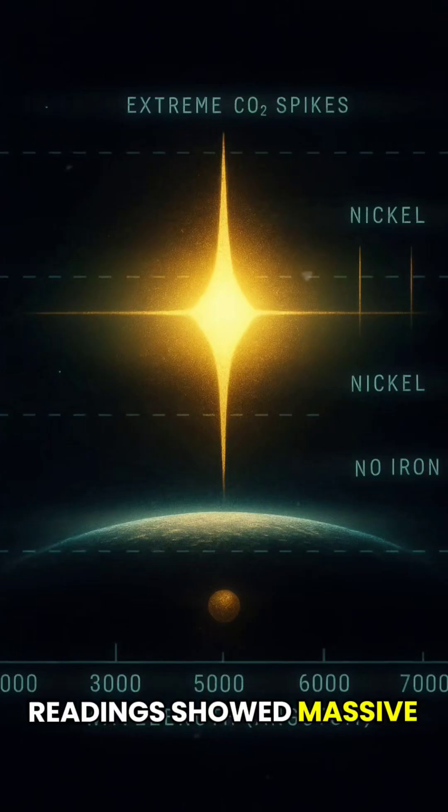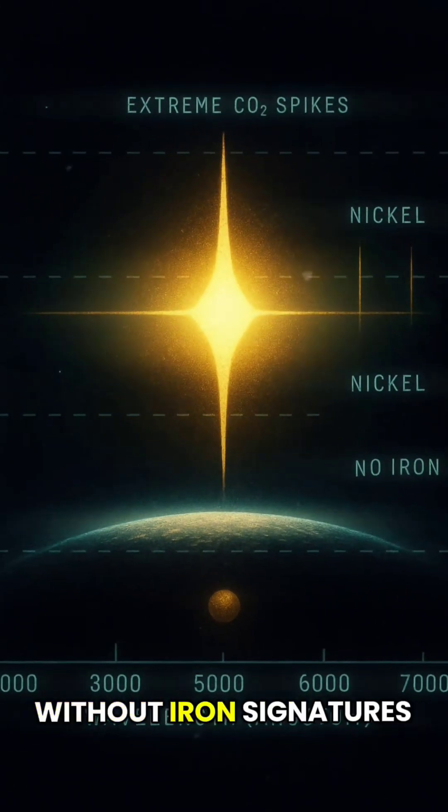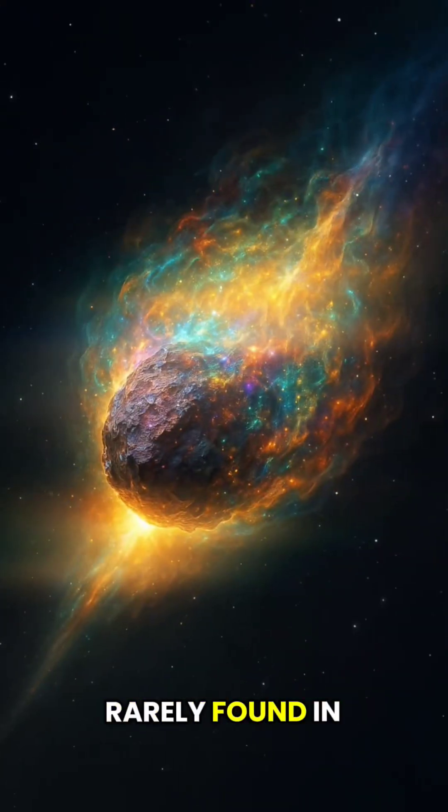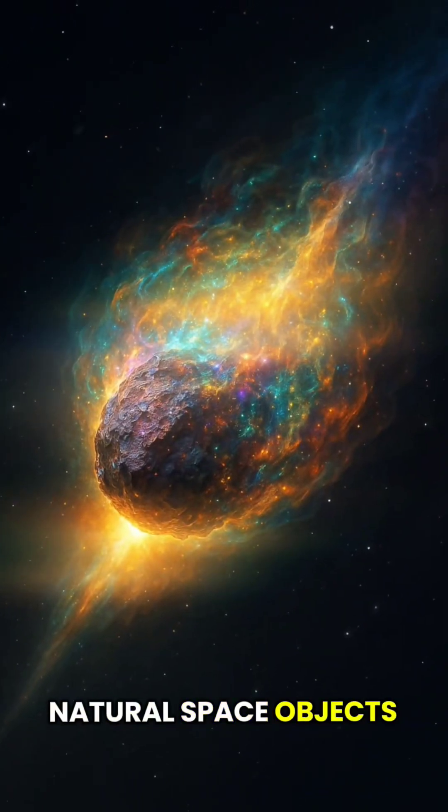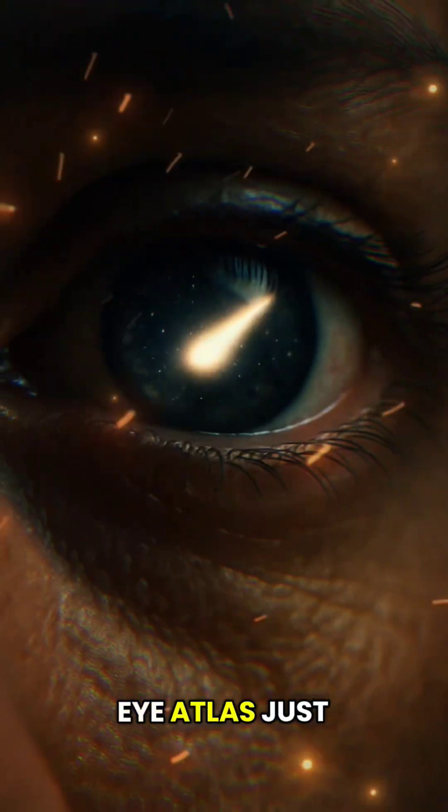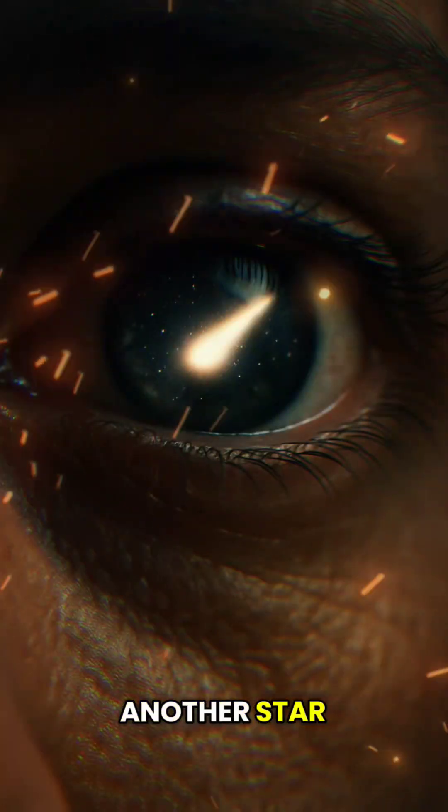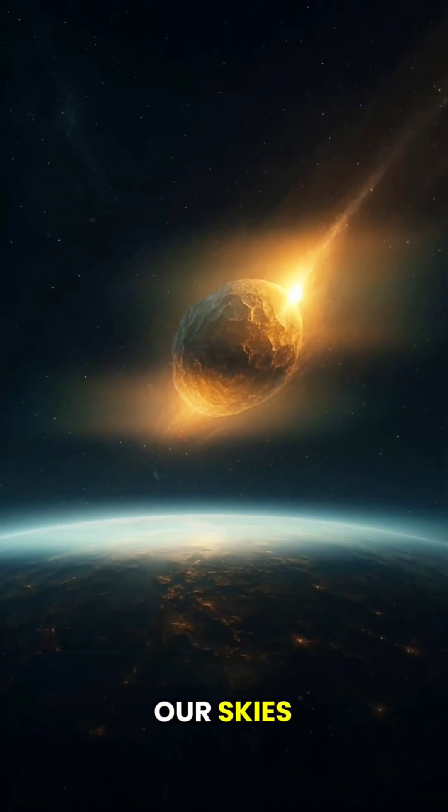Readings showed massive amounts of carbon dioxide and even nickel without iron, signatures rarely found in natural space objects. So is 3I Atlas just a comet from another star, or something far stranger passing through our skies.